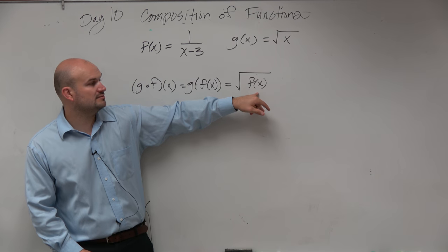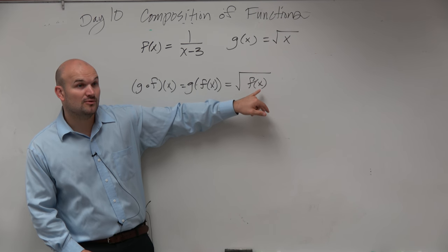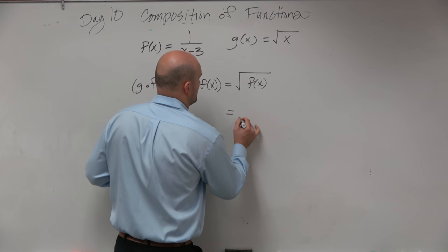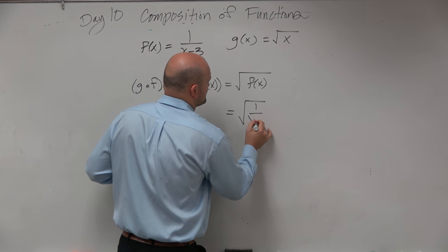That was okay because we didn't know what the f of x was. Now we know what this is. This is equal to square root of 1 over x minus 3.